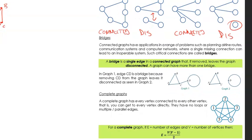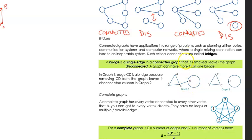What gets a little bit tricky is determining if a graph has a bridge. Connected graphs have applications in a range of problems such as planning airline routes, communication systems and computer networks where a single missing connection can lead to an inoperable system. Such critical connections are called bridges. So a bridge is a single edge in a connected graph that, if removed, leaves the graph disconnected. A graph can have more than one bridge. So here we have graph one. The edge C-D here, this edge here is a bridge because if we remove this, if we take this away, we're left with this disconnected graph. So we can remove any one of these edges and we can still get from one to another. But the only one that if we remove it will leave a disconnect is C-D. And so C-D is considered a bridge.